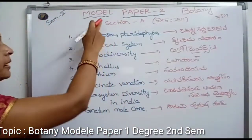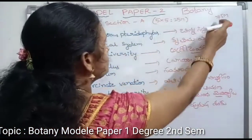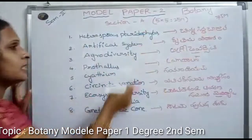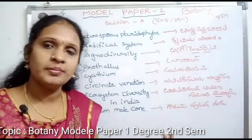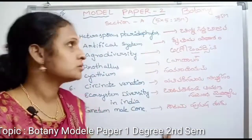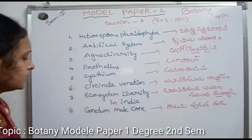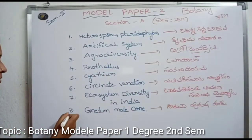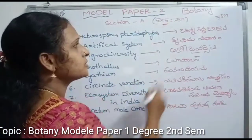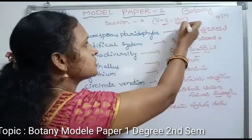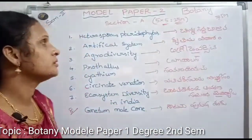You already have the paper pattern. Botany, Second year, 75 total marks. Section A and Section B. Section A has short questions — 5 marks each, total 8 questions. You select any 5 questions from the 8 questions. Each question carries 5 marks, so 5 times 5 is 25 marks.